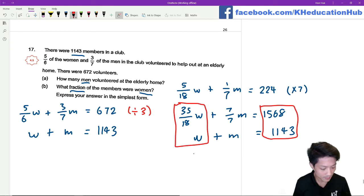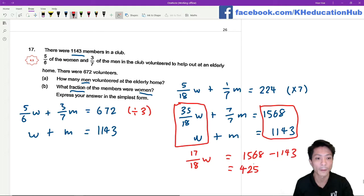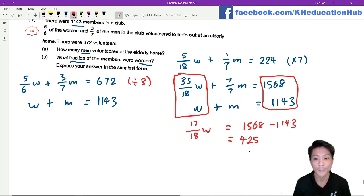If I were to subtract 35 minus 18, I know that 17 over 18 of the women is equals to 1568 minus 1143, which is gonna be equal to 425.